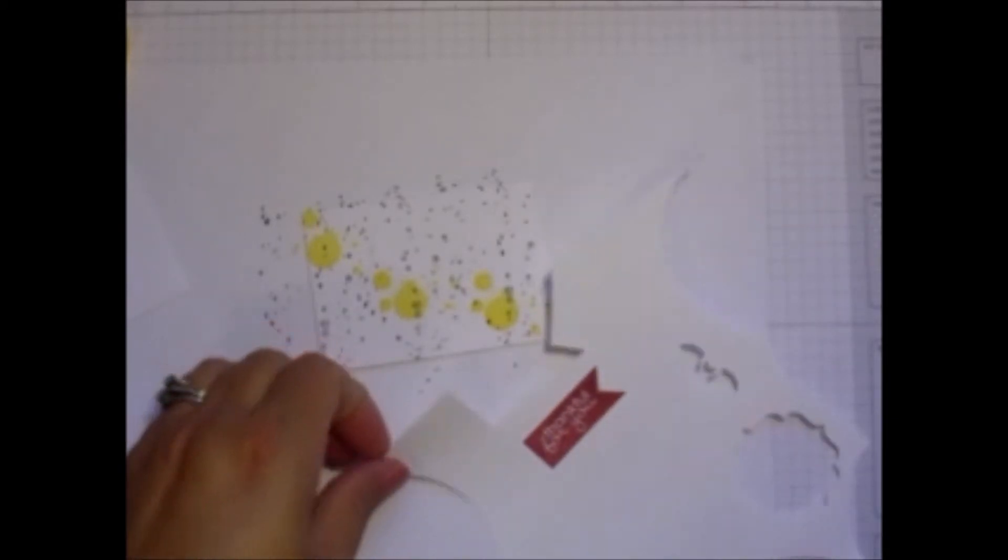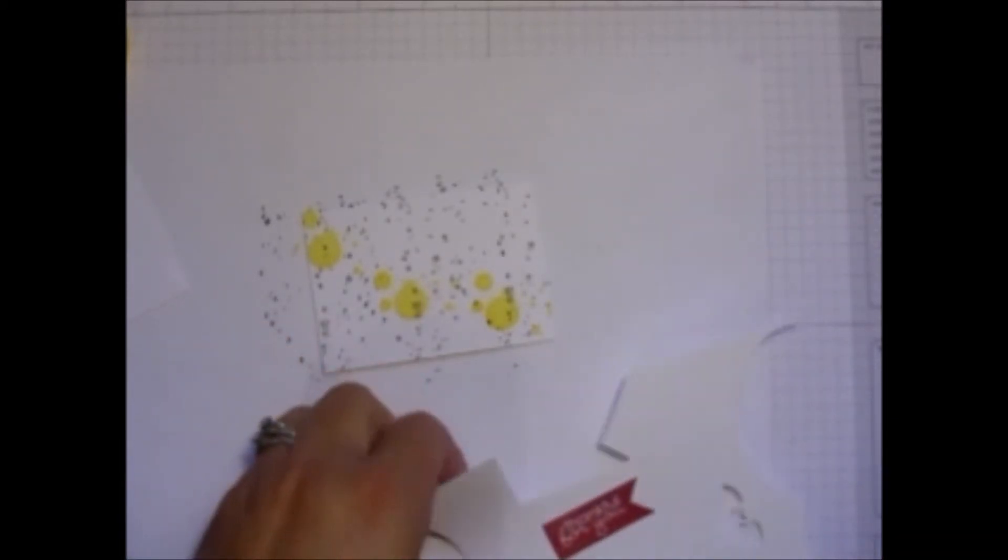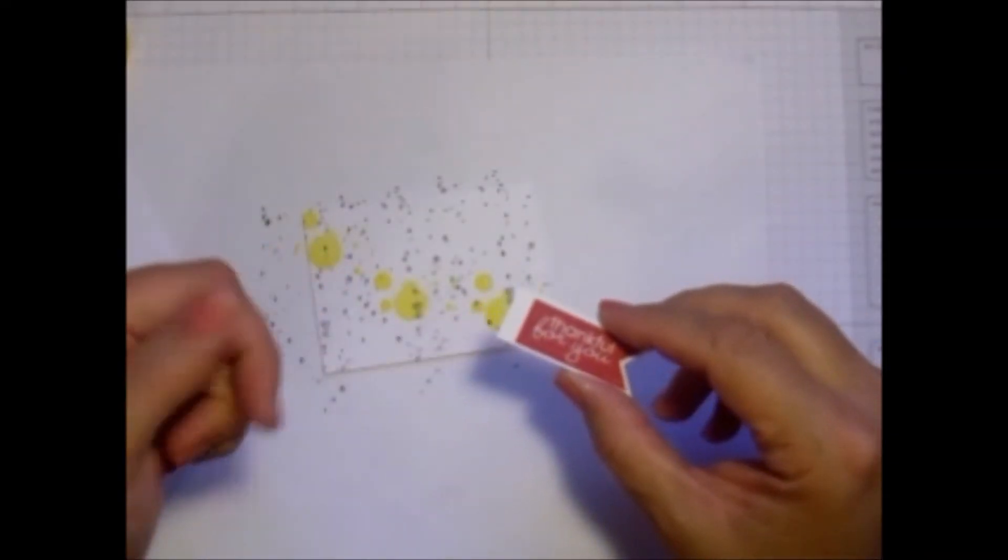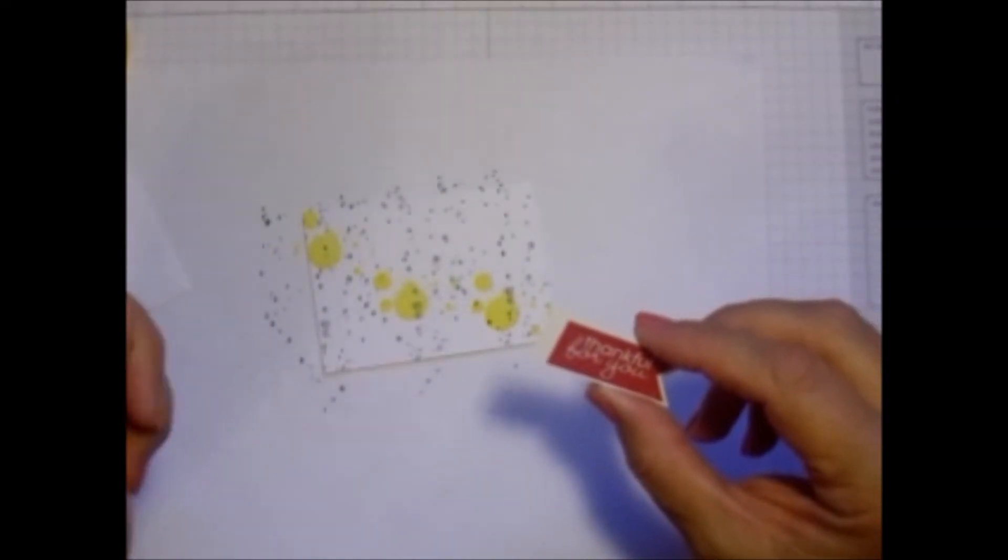Then I'm going to take my paper snips and cut it out. And I'm going to leave a little bit of extra white on the edge because I'm going to put a little staple there.